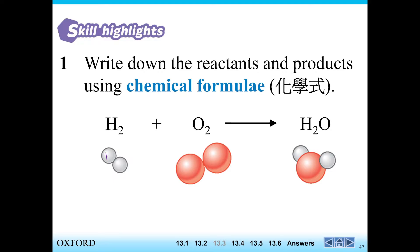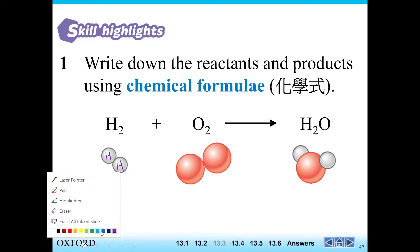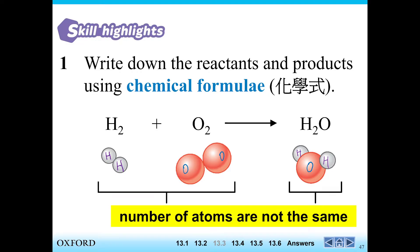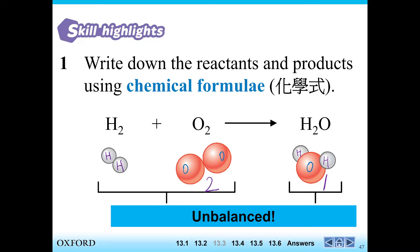So H2 means there are two hydrogen atoms — one and two. Oxygen is O2, so that's one and another oxygen atom, two oxygen atoms. But for water H2O, you form one oxygen atom and two hydrogen atoms. Now my question is: are the left hand side and the right hand side having the same number of atoms? You'll notice no — the number of oxygen atoms on the left is two, but on the right there is only one. So the number of atoms is not balanced — it's unbalanced.